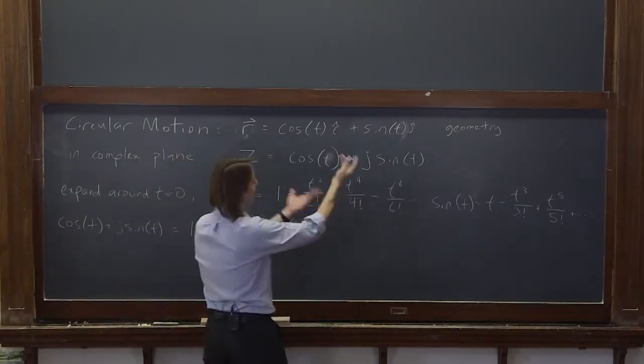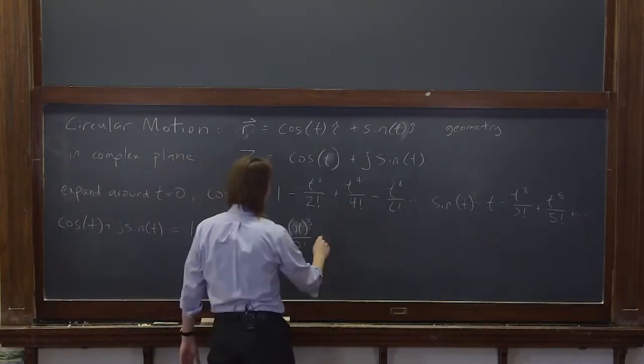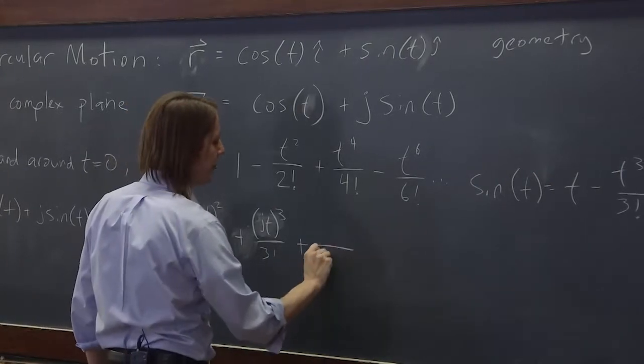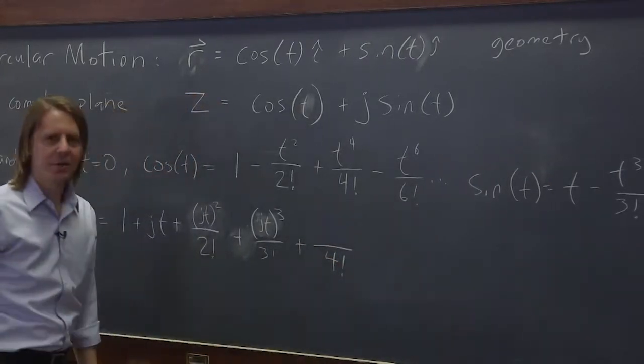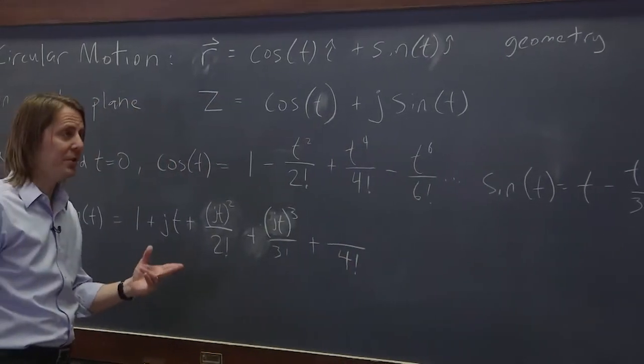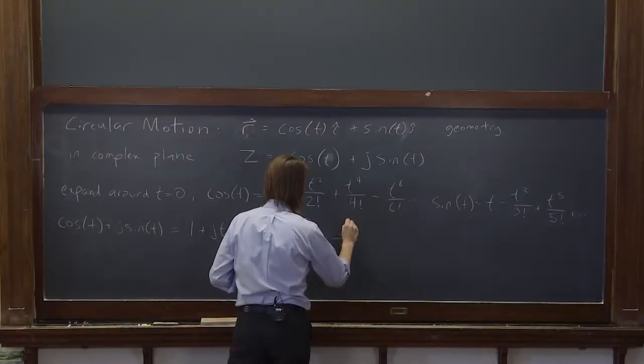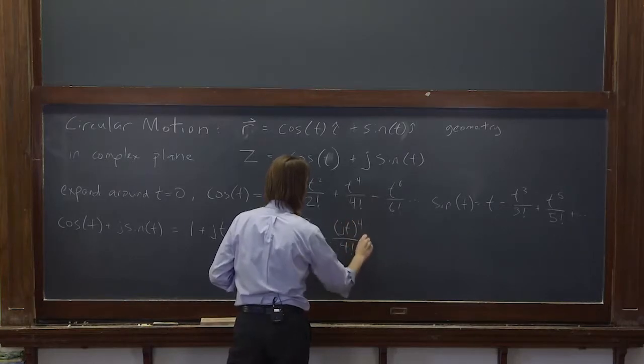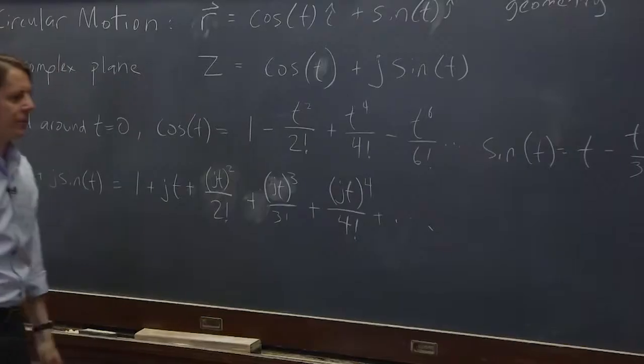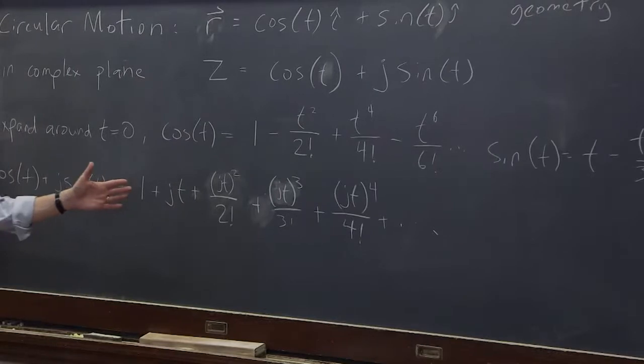And then, now you say we're done, we're out of j's. All right, what are we going to do? We have plus t to the fourth over four factorial. Well, guess what? j to the fourth is one. j squared is negative one, and j squared is negative one - negative one times negative one is one. So this is actually jt to the fourth over four factorial. So you can see there's a pattern here.